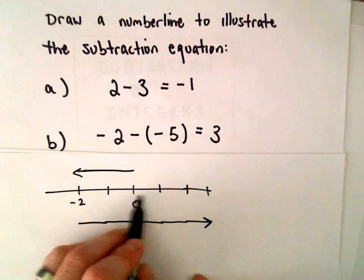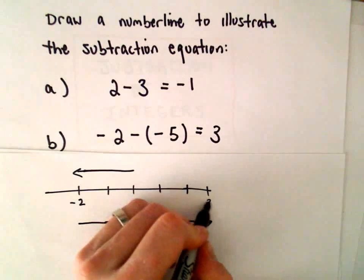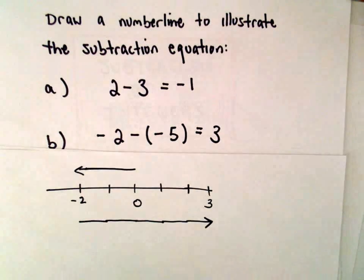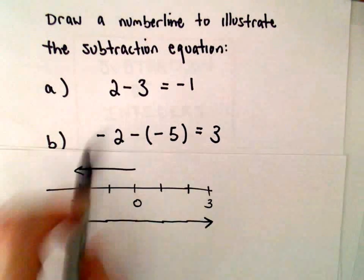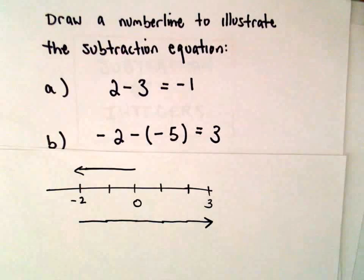And again, you can count. This would be 0, 1, 2, and this would put us at positive 3. So that would be a diagram that goes with, or a number line that goes with Part B.